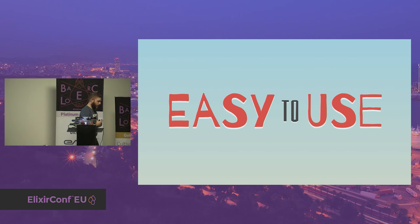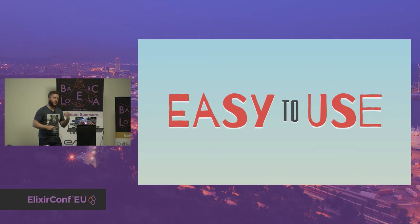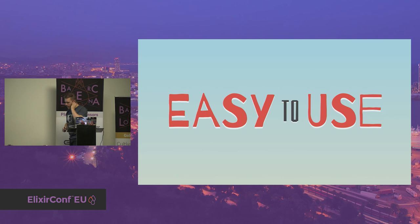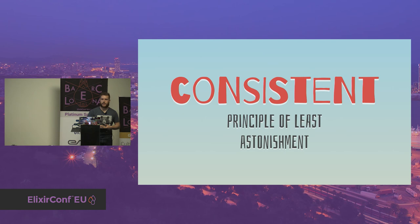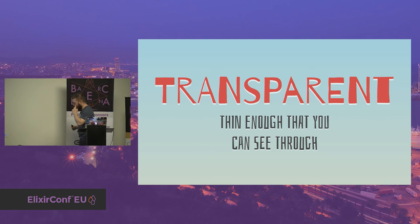Another thing a good library should have is easiness of use. If you write a library and it's not easy to use, it's going to be hard to have people use it. To be easy to use, I think consistency is good to strive for. The principle of least astonishment says: try to do what users expect the library to do — don't break their expectations.